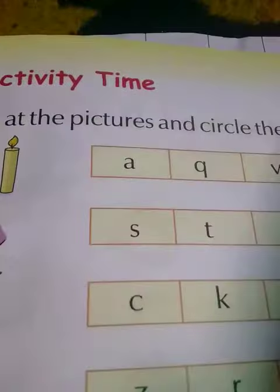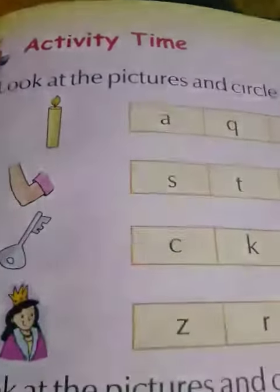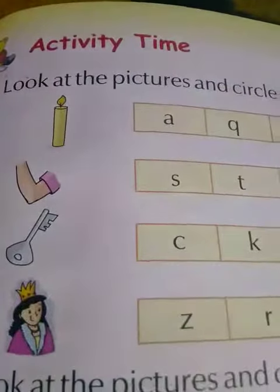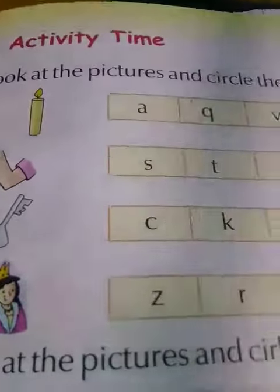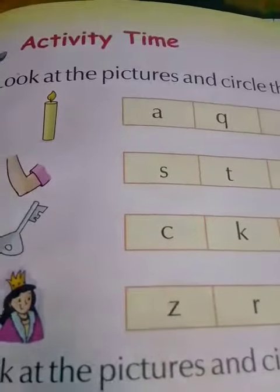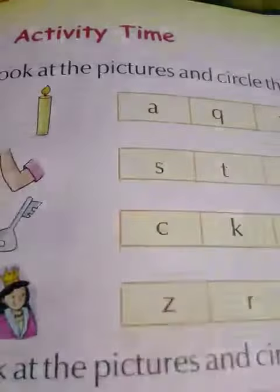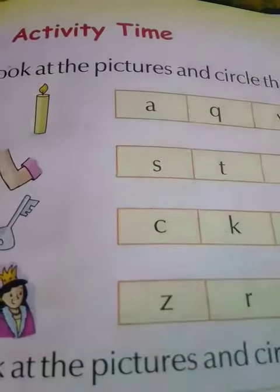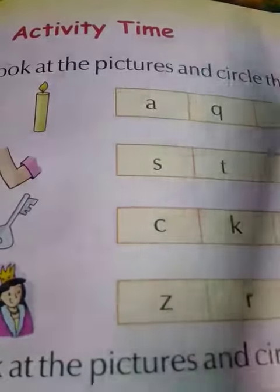Here is an activity for you. Look at the pictures and circle the correct letters. Look dear, what you have to do. Here are some pictures and here are some letters. You have to find that letter with which the name of the picture starts, and then you have to circle the correct letter.